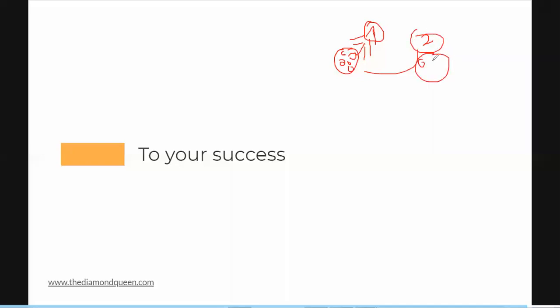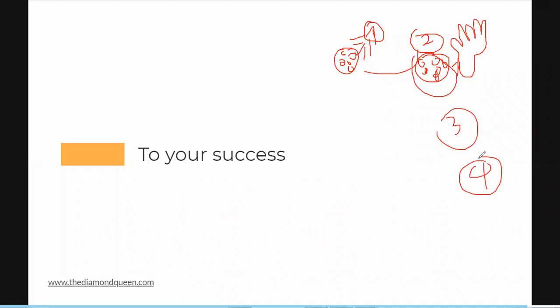Once I create group two, I start inviting people again. When someone raises their hand and wants to be part of the group, I make them the admin, and the rest of the people in the group who decide to become members register under that person. Then I do a third group, a fourth — because I need to duplicate. I focus on helping these people grow their teams and bring more people to their WhatsApp groups. This is a numbers game: the more people you have, the more you sign up, with a 10% conversion rate. Check our website, thediamondqueen.com, for more tips on growing Element. My name is Kuda — see you on the next video!